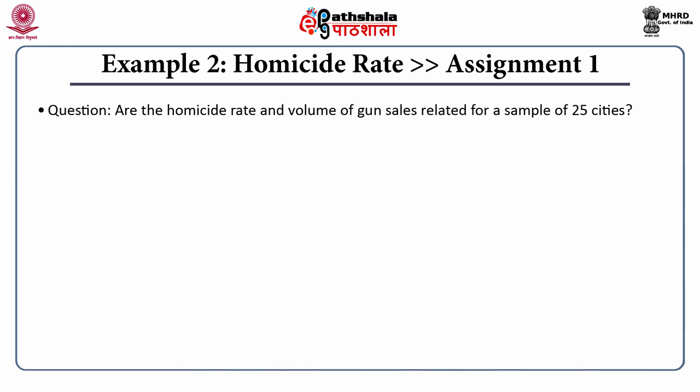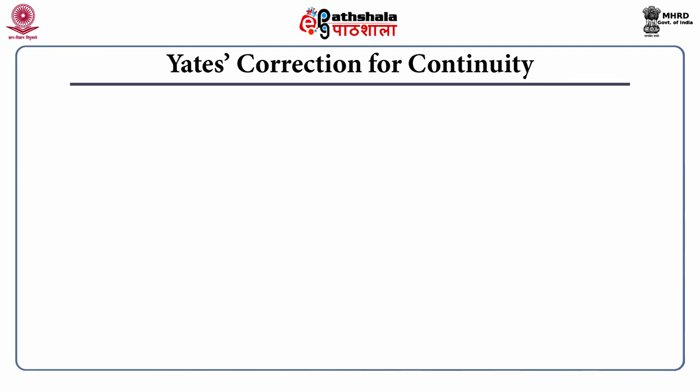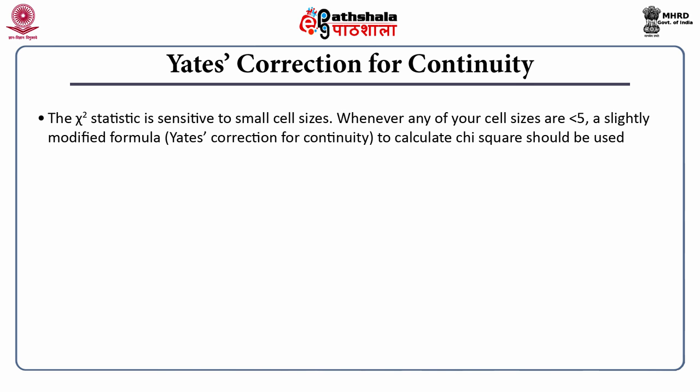The second example: are homicide rate and volume of gun sales related for a sample of 25 cities? Gun sales are categorized as high or low, while homicide rate is low or high — a two-by-two contingency table. The first step is to calculate row and column totals, then compute observed and expected frequencies. One key issue with this kind of small data is that the chi-square test statistic is sensitive to small cell sizes. Whenever any cell size is less than five, a slightly modified formula — Yates correction for continuity — is to be used.